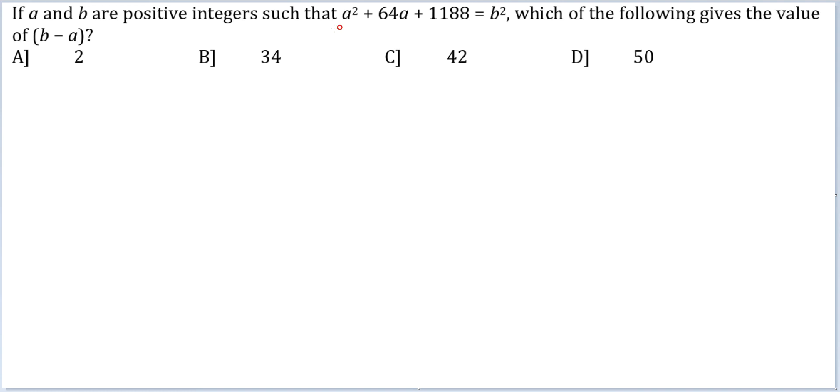Hopefully you can straight away see what you have to do is complete the square on this side. So it would be a² + 64a + 32² is 1024.